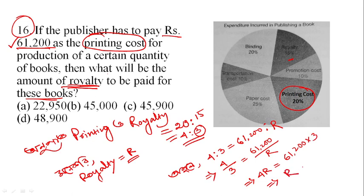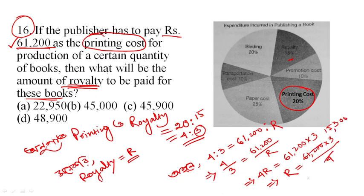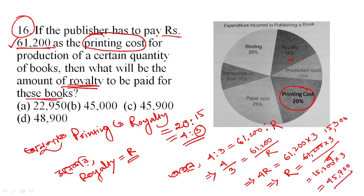Royalty is equal to 61,200 divided by 20, multiplied by the royalty percentage. The result gives royalty as 45,900. Option B is the right answer.